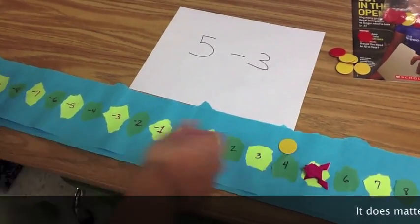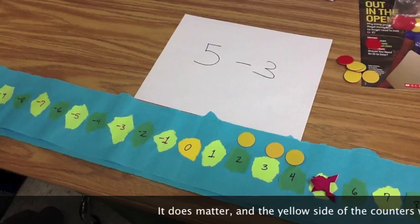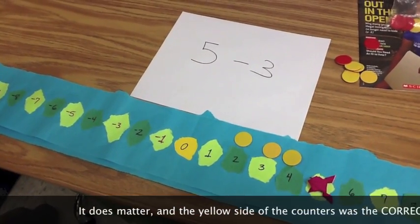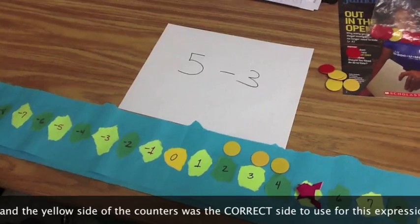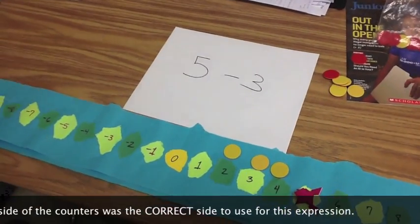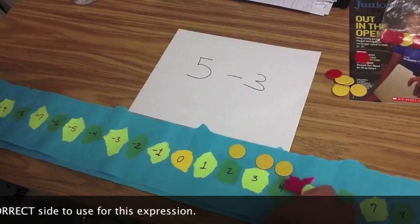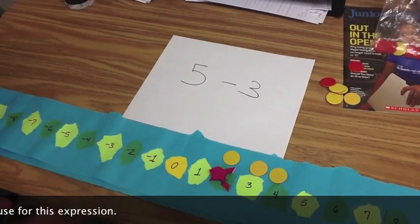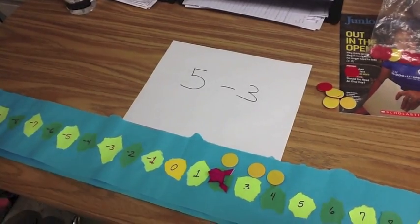And I'm wondering, should I use the yellow side of the counters or the red side of the counters? Or does it matter? I think it depends on his mood. Probably, I honestly don't know. But let's go with the yellow. Yeah, let's go with the yellow. It gets us there. So one, two, three. So five minus three is two. So our math frog knows a little bit more math.